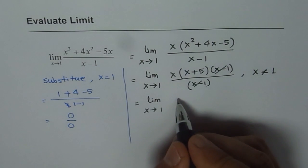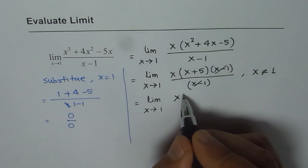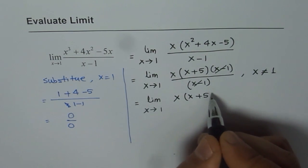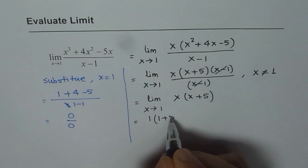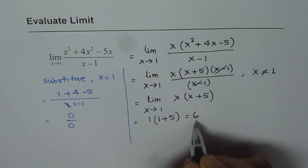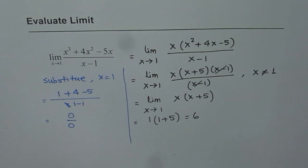So we have this function as limit x times x plus 5. At this stage, you can substitute 1 here and so you get 1 times 1 plus 5, which is 6. So the limit of this function is 6.